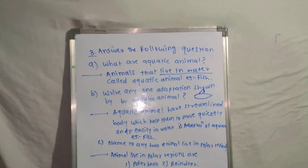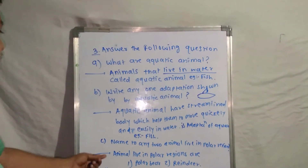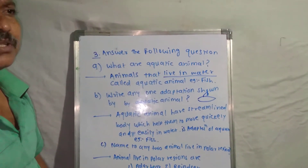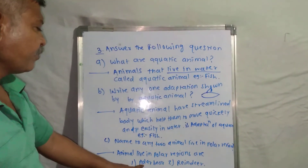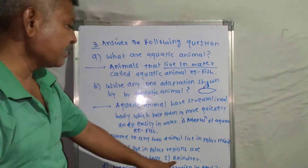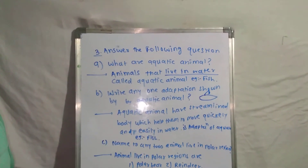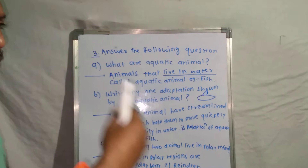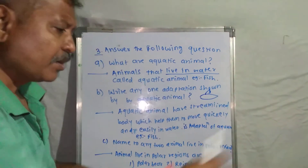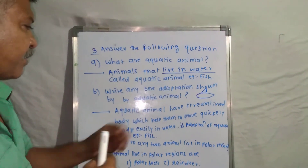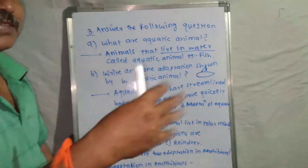The third question: 'Name any two animals that live in the polar region.' The polar region is an extremely cold region. The two animals are the polar bear and the reindeer. Reindeer also live in the polar region and are used for transportation — people use reindeer to pull carts from one place to another.